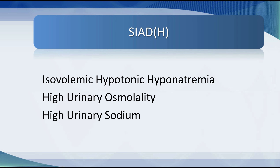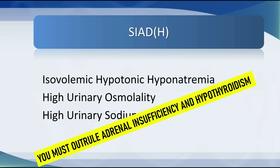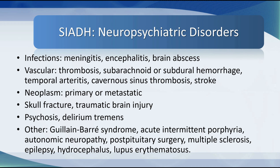SIAD: isovolemic hypotonic hyponatremia, high urinary osmolality, high urinary sodium. If you see this picture you must rule out adrenal insufficiency and hypothyroidism before settling on this diagnosis. There are many causes of this disorder — I want to warn you there's a long list ahead, but it's imperative that I go through it.